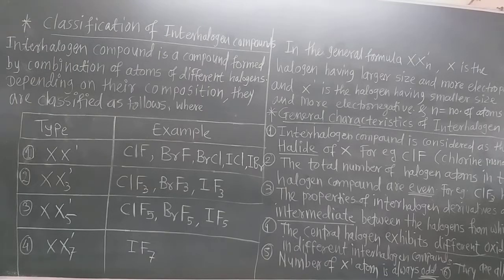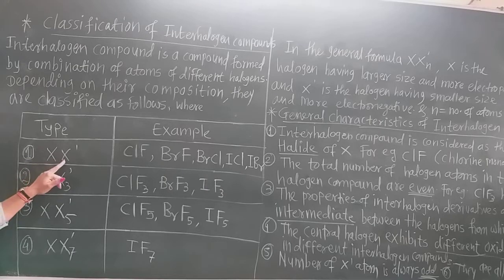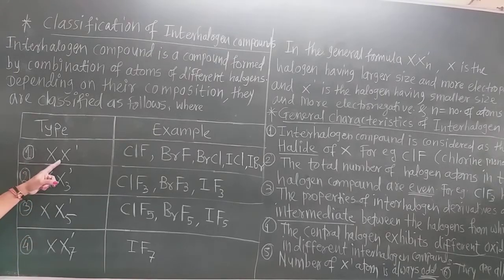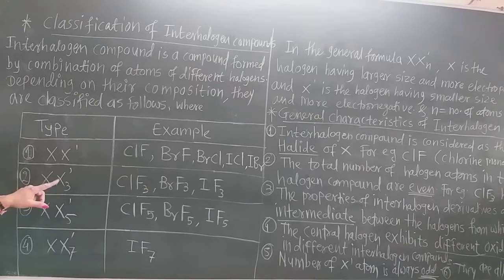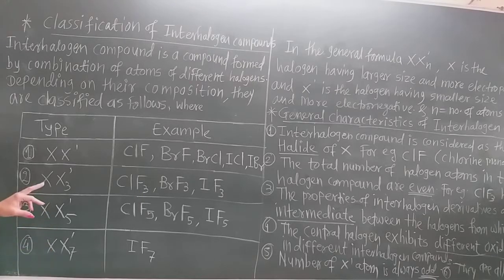The general formula is XX'. X is the more electropositive halogen and X' is the more electronegative halogen. That means the electronegativity of X is less and electronegativity of X' is more. Examples: ClF, where fluorine is more electronegative and chlorine is less electronegative. Also BrF, where fluorine is more electronegative and bromine is less electronegative.